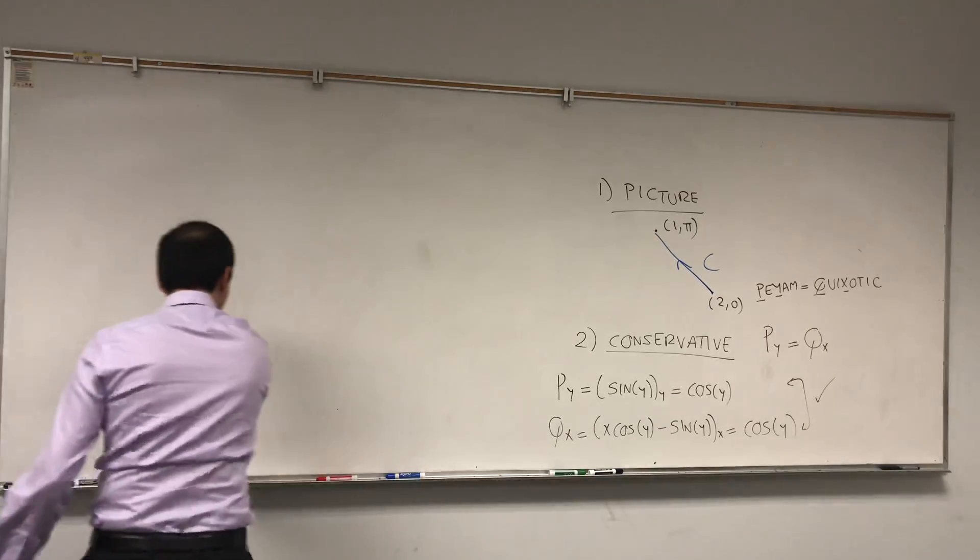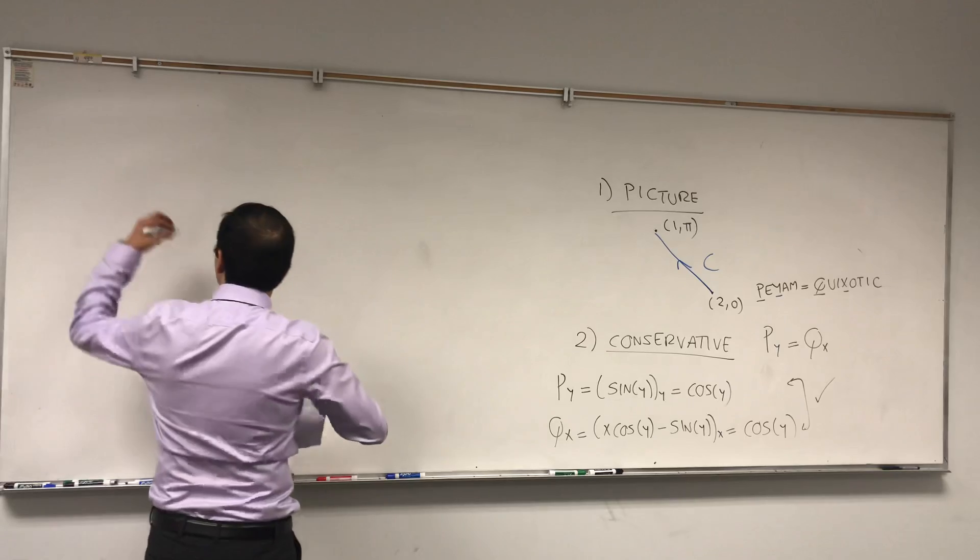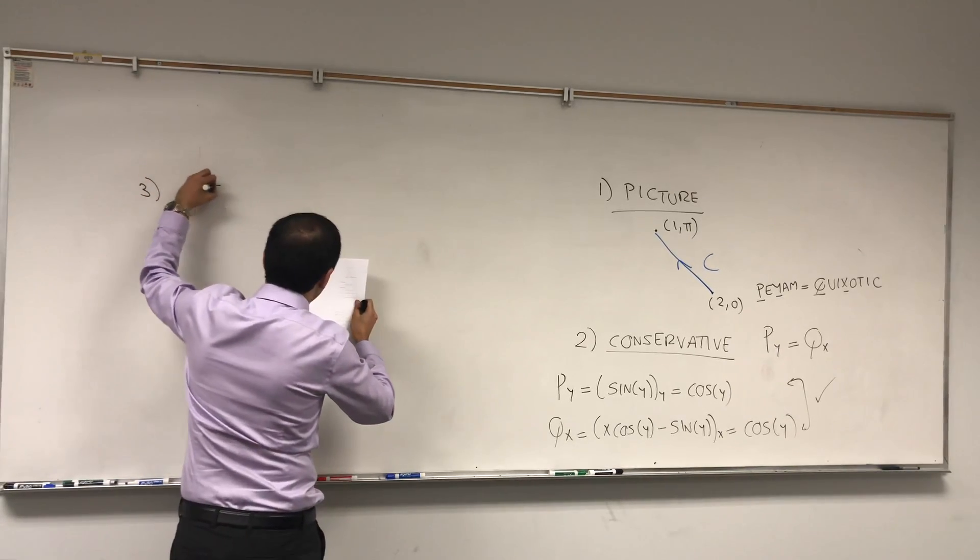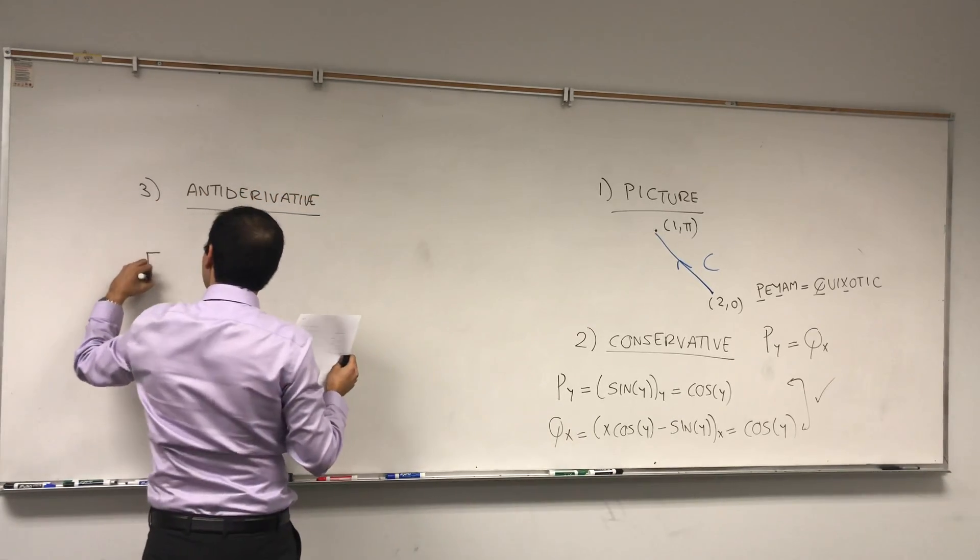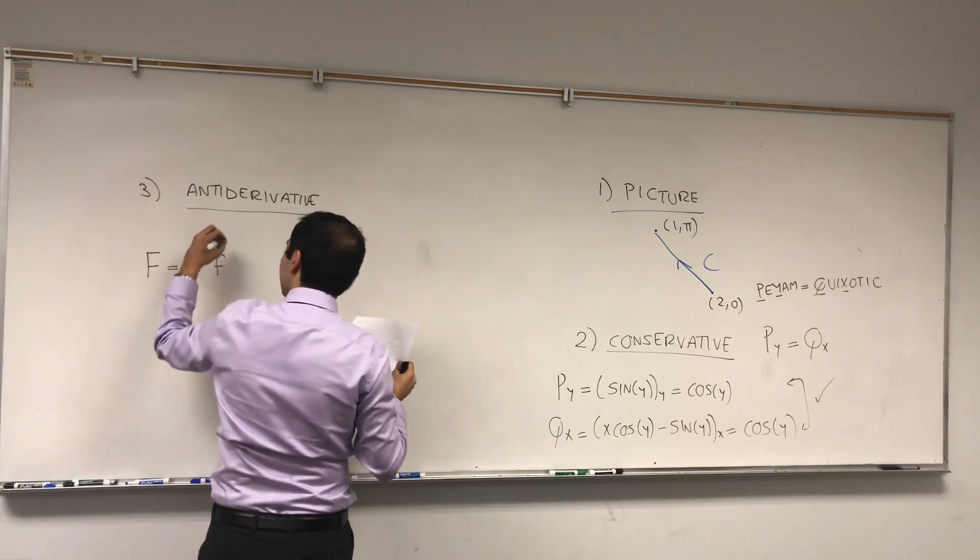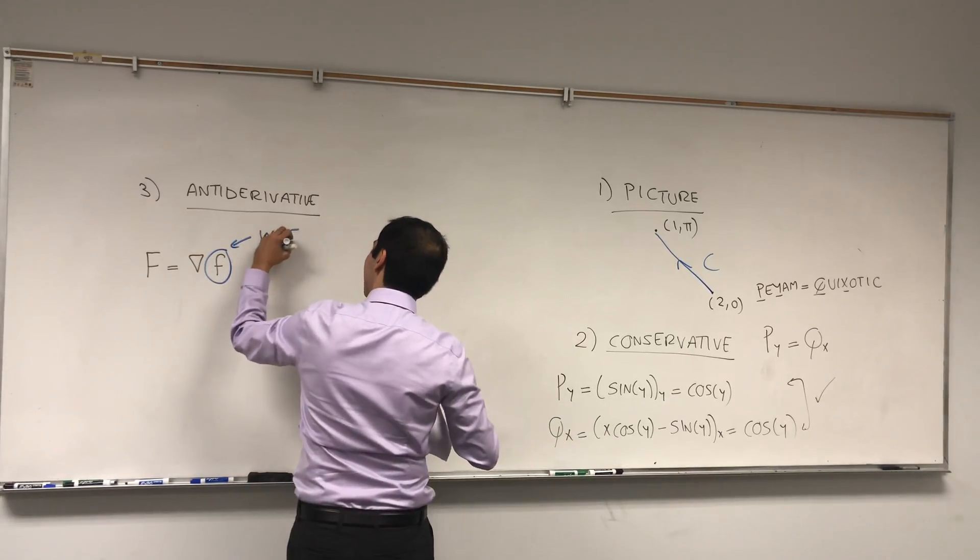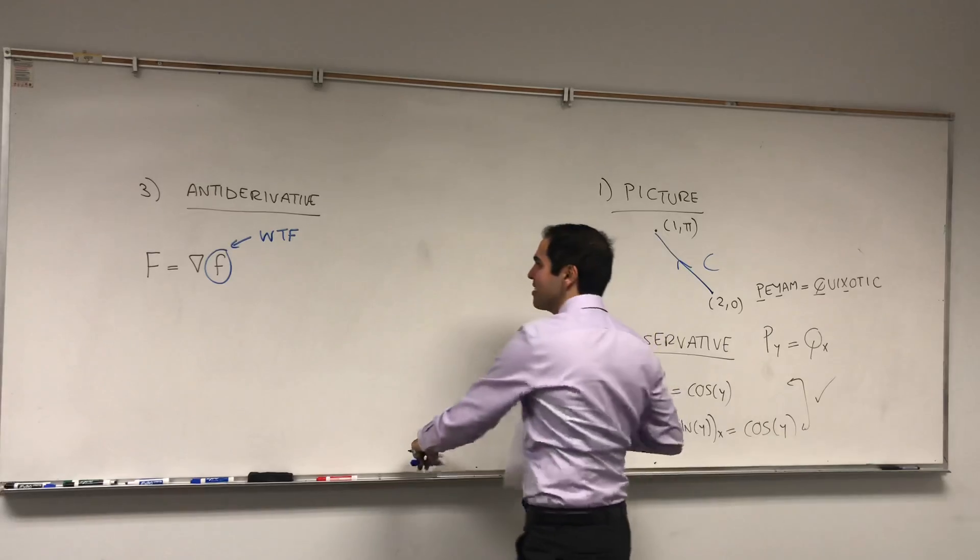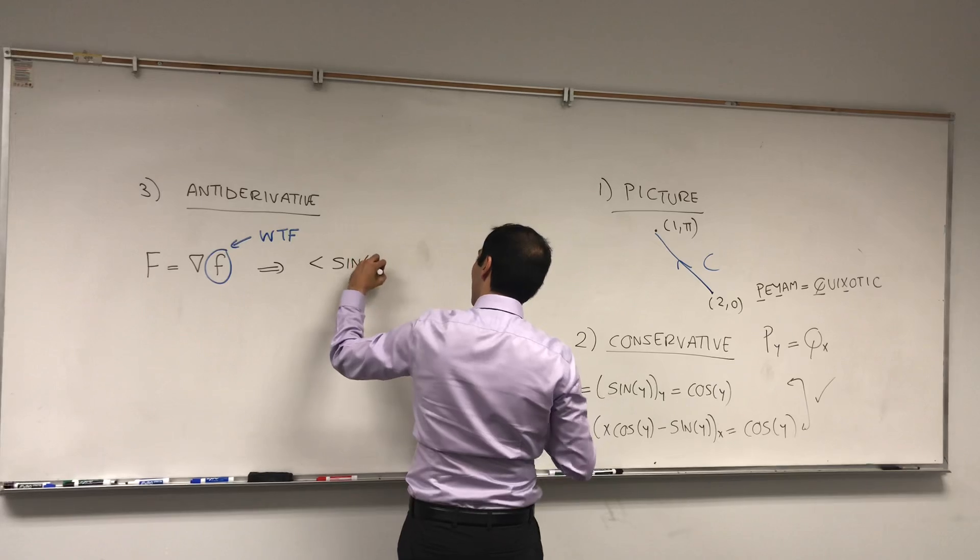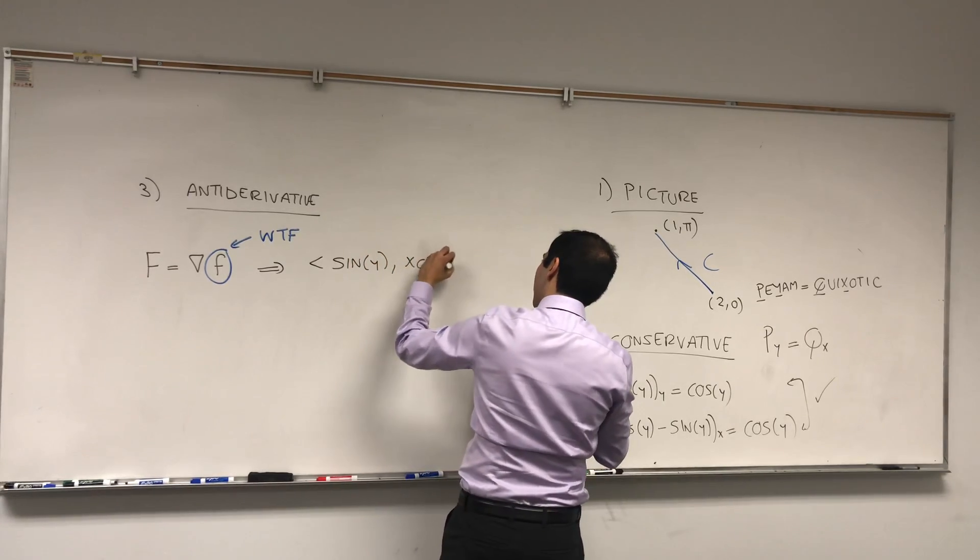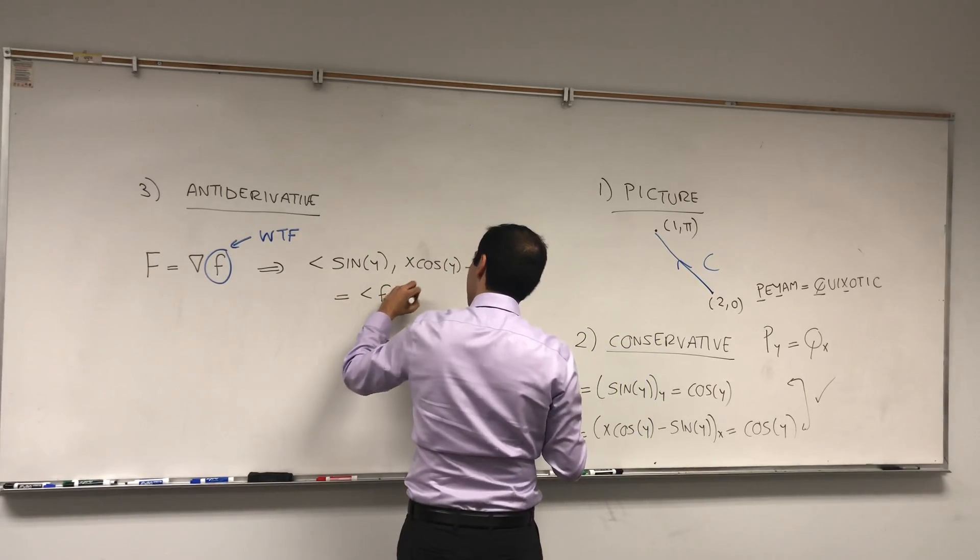So the next step is just to find an antiderivative of the vector field F. Let's find little f such that capital F is the gradient of that function. And remember, what we want to find is always abbreviated as WTF. So in other words, what you have to do is show that sin(y) and x·cos(y) - sin(y) can be written in terms of fx and fy.